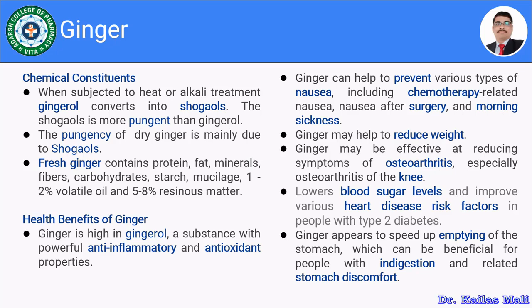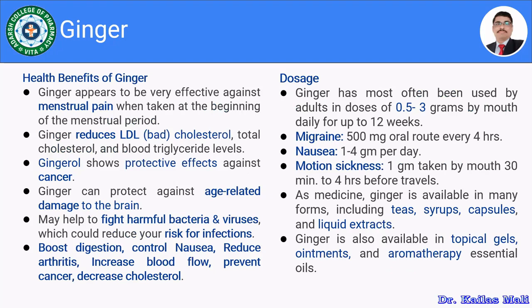Ginger is also used in diabetes to manage sugar levels, as it has the ability to lower blood sugar levels. It is also going to manage risk factors associated with heart diseases. Ginger appears to speed up emptying of the stomach, which can be beneficial for people with indigestion and related stomach discomfort. Furthermore, ginger appears to be very effective against menstrual pain when taken at the beginning of the menstrual period.